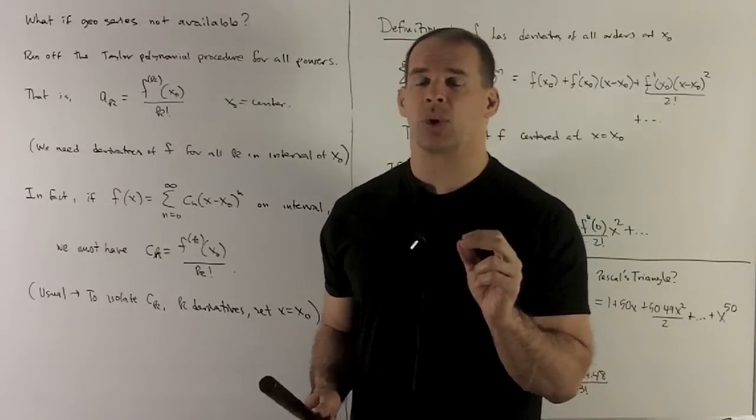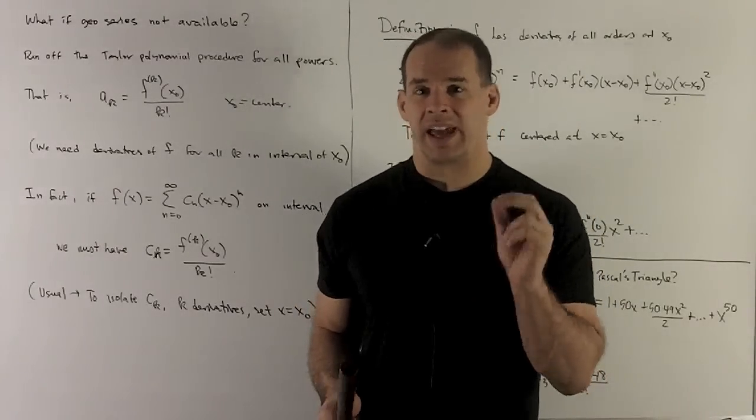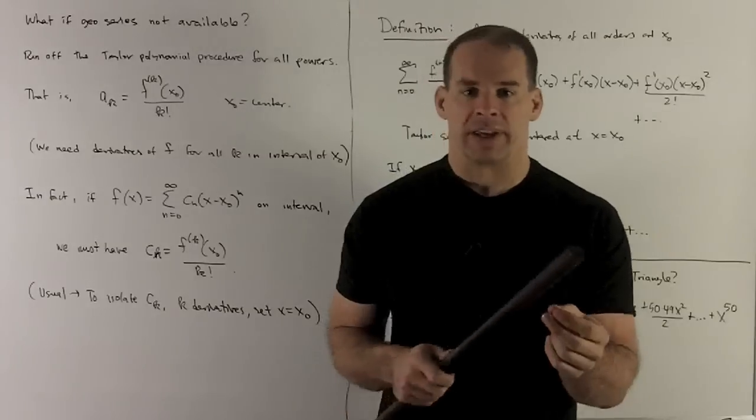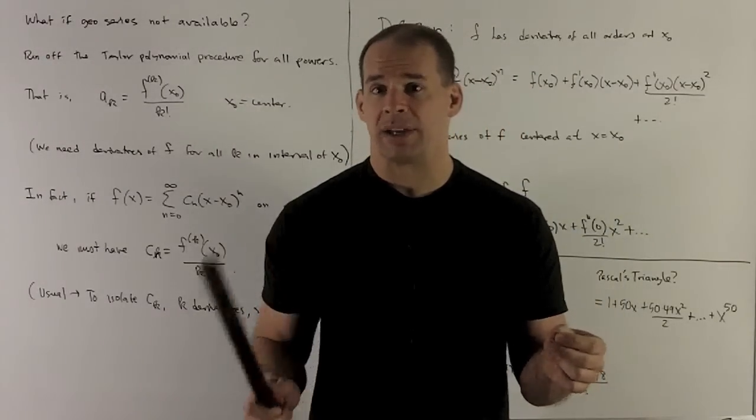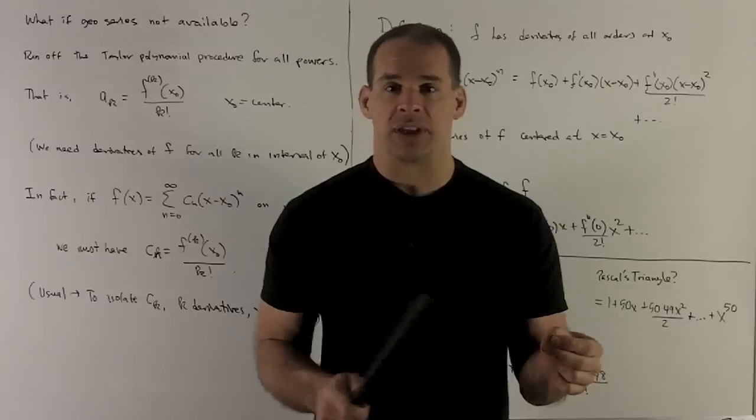divide by k factorial, and that's going to give us the kth Taylor coefficient. So if I get enough of these Taylor coefficients, we could just load up powers of x minus the center, and then that's going to give us a polynomial.